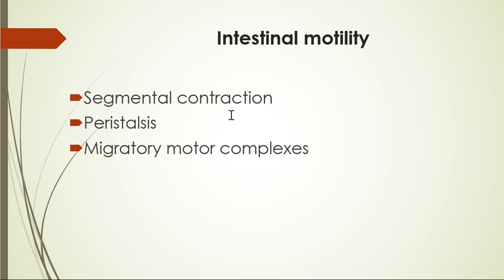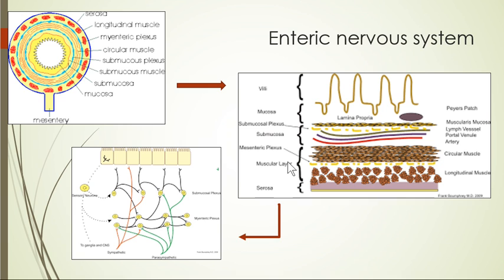Different motility patterns are available in the intestine: segmental contractions, peristalsis, and migratory motor complexes. We'll examine each pattern and how they are regulated. But first, we should understand the layers of the gut, starting with the serosa, then the longitudinal muscle layer, then the circular muscle layer.